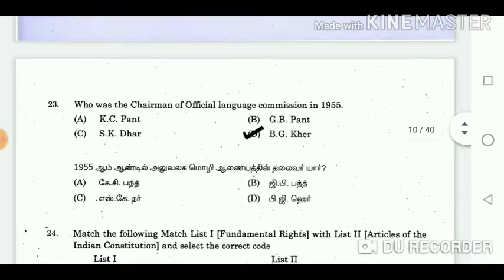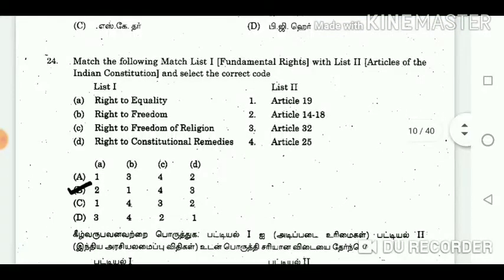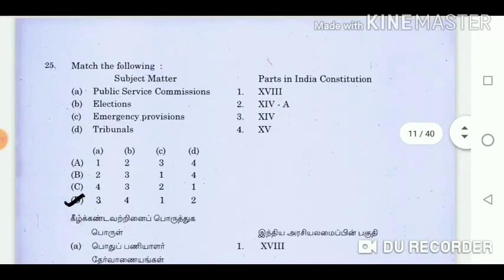Question 23: Who was the chairman of the Official Language Commission in 1955? Answer: B.G.K. Question 24: Match List 1 — Fundamental Rights with List 2 — Articles of the Indian Constitution and select the correct code. Answer: A2, B1, C4, D3. Question 25: Match the following. Answer: A3, B4, C1, D2.